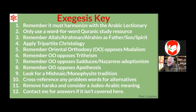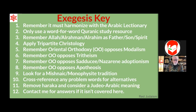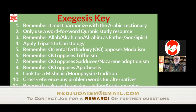Step eleven: if the word is still consistent in meaning, consider a Judeo-Arabic meaning. The Umayyad texts were written in Judeo-Arabic, and a Judeo-Arabic interpretation will probably solve the matter. A list of common Judeo-Arabic words can be provided — email redjudaism@gmail.com. And finally, if you're still having a problem with the verse, contact with payment details ready: if Joe can't explain it or finds he's missed a step, you deserve a reward.